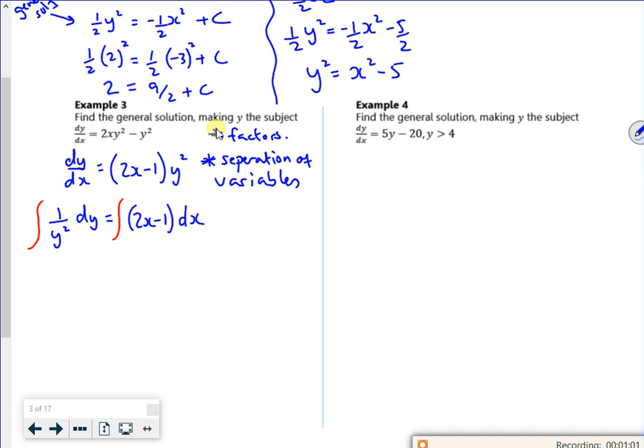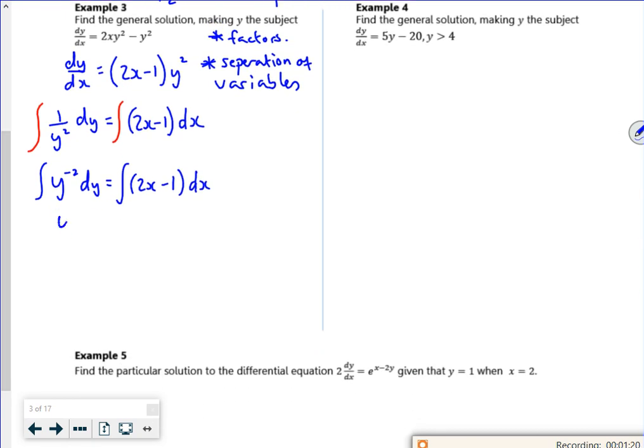Just a reminder, 1 over y squared doesn't become a log, because if I differentiate the bottom, it's not a multiple at the top. So I'm integrating y to the power minus 2. So I get y to the power minus 1 divided by minus 1, which is the same as minus 1 over y. That's going to be x squared minus x plus c.